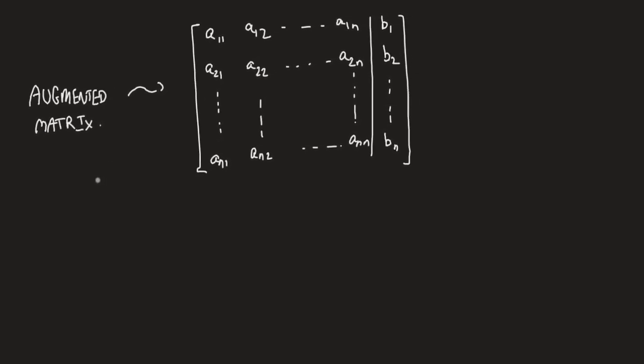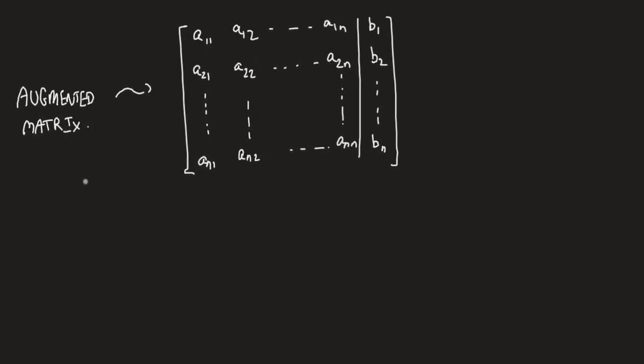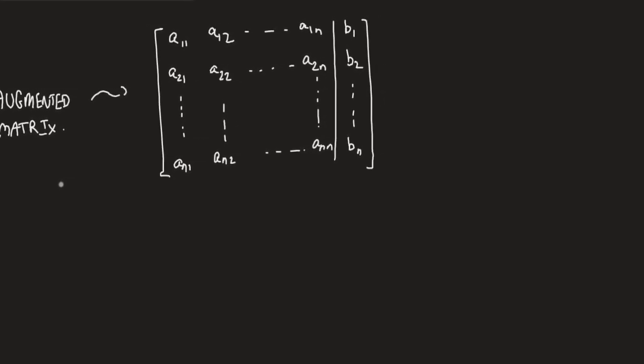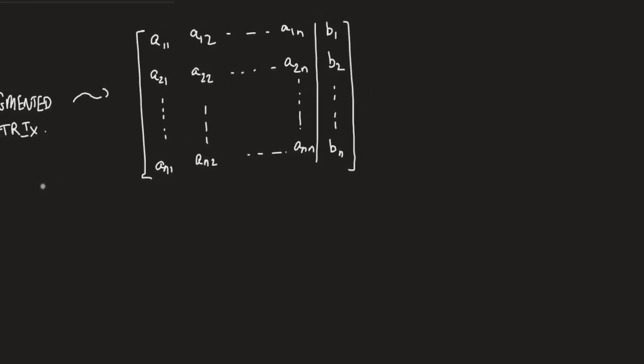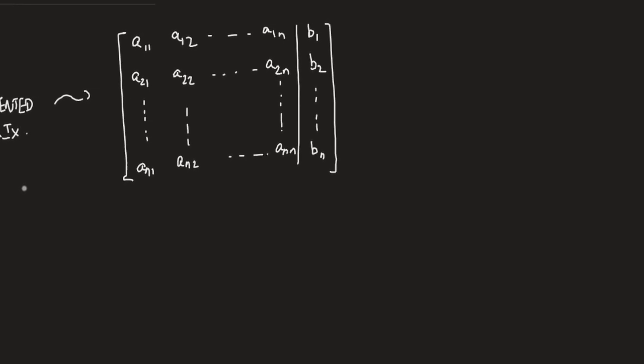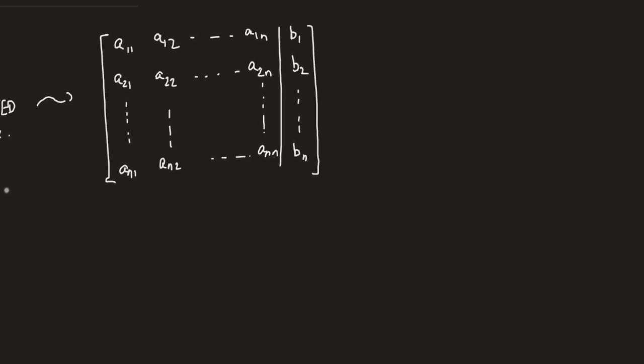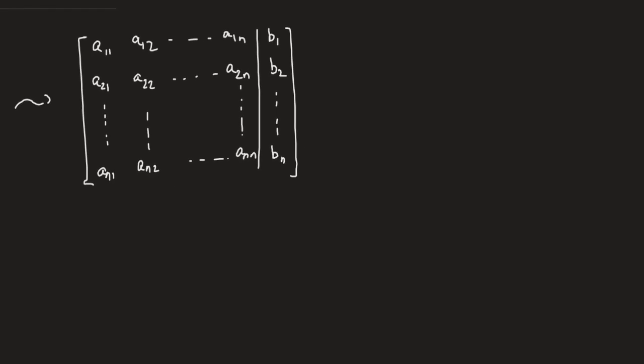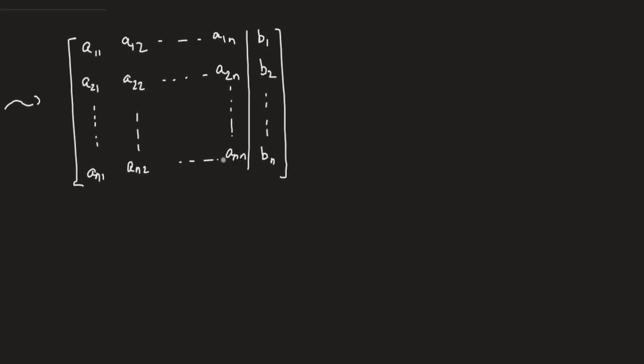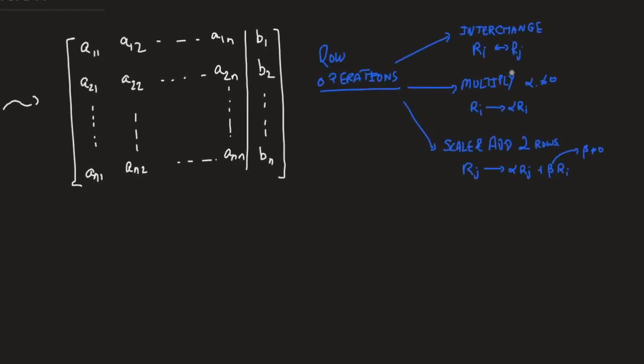Now, Gaussian elimination performs row operations on this augmented matrix until the portion corresponding to the coefficient matrix is reduced to an upper triangular form. Now, first of all, what are the row operations, which we discussed in the previous lecture? The three operations that we're allowed to do in any order whatsoever is that we can interchange two rows, multiply a row by a non-zero scalar, and last but not least, you're allowed to scale and add two rows and insert the outcome in one of those two rows.